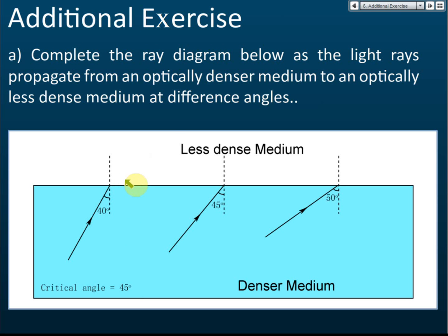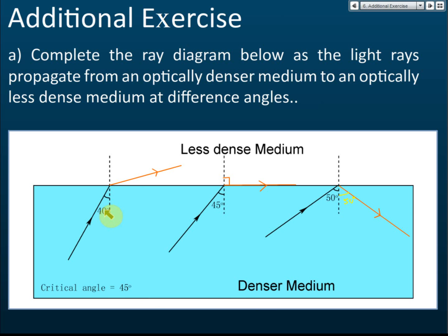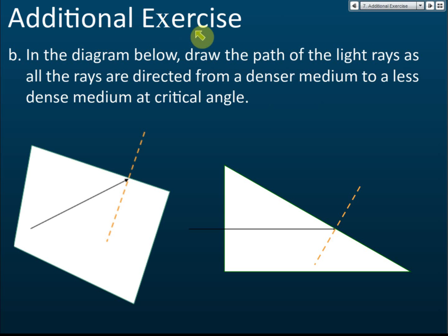For an additional exercise, three cases are given with critical angle equal to 45 degrees — angles of incidence 40, 45, and 50 degrees — and you need to complete the ray diagram showing whether the ray is reflected or undergoes total internal reflection. The answers are: angle less than 45 degrees — refracted out; angle equal to critical angle — refracted at 90 degrees; angle greater than critical angle — total internal reflection.